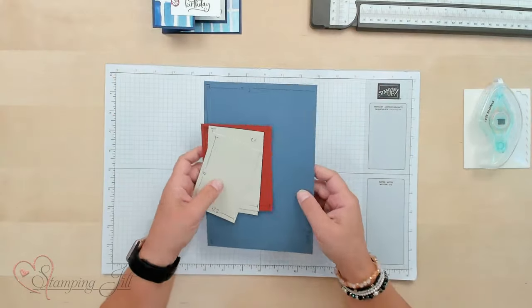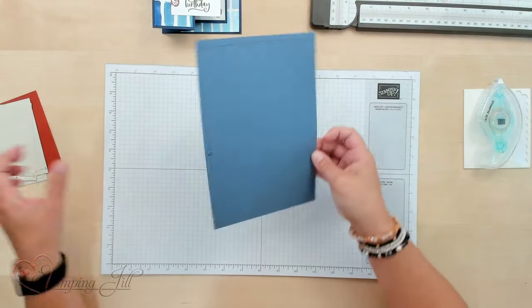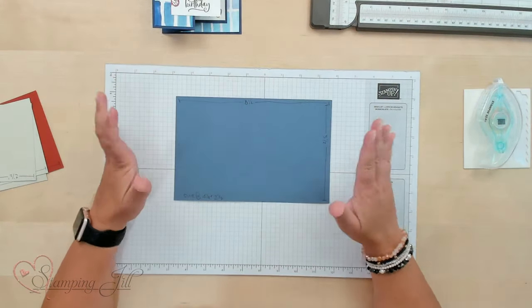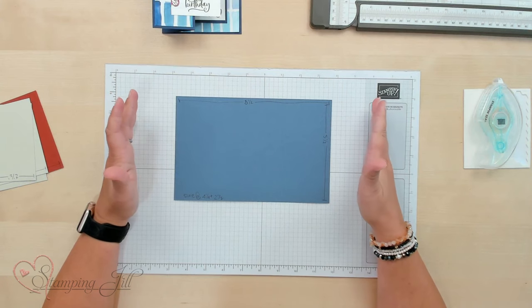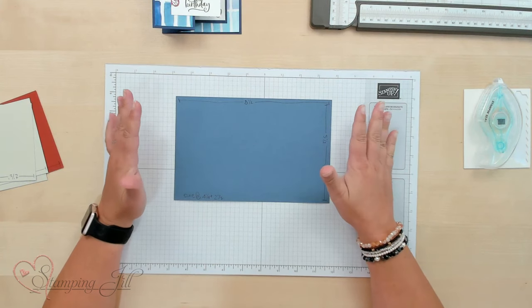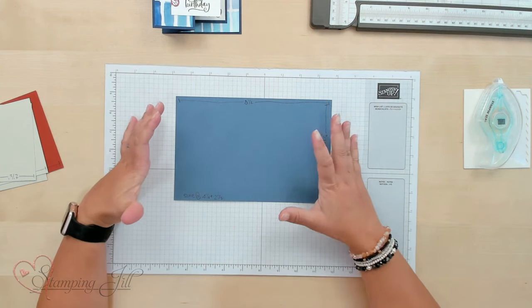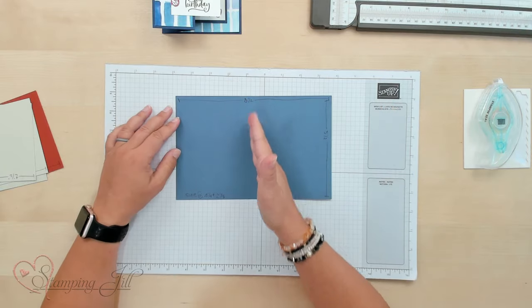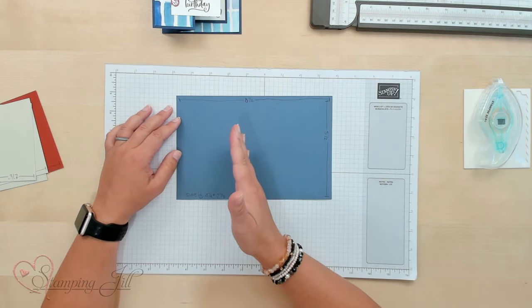So I have my pieces here and I'll give you all the dimensions. We're going to start with a card base of 8 1/2 by 5 1/2, just a typical base, but we're going to score this at 4 1/4, so halfway, and then also at 2 1/8.